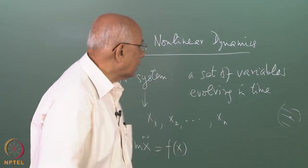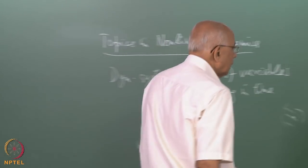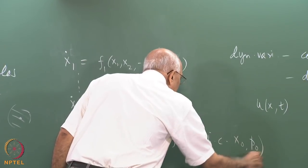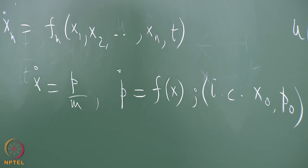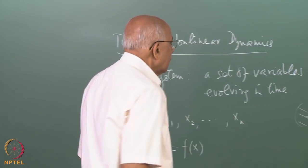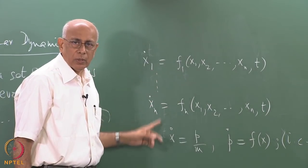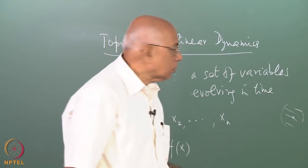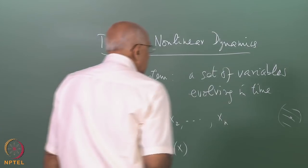Newton's equation ẍ = F(x)/m appears second order, but it actually is not — to solve it uniquely you need both x(0) and ẋ(0). The correct formulation is ẋ = p/m and ṗ = F(x): two coupled first-order equations for two dynamical variables x and p, yielding a unique solution given initial conditions x₀ and p₀. Even the Schrödinger equation is first order in time, so this conclusion holds in quantum mechanics as well.